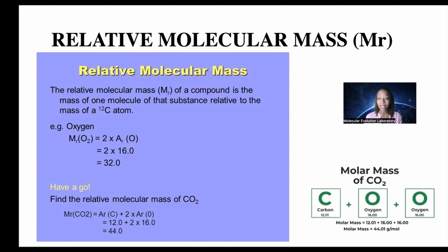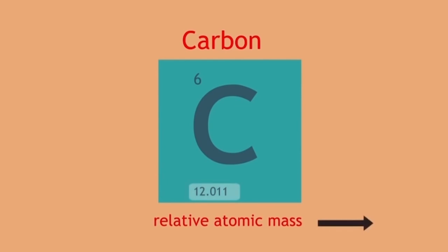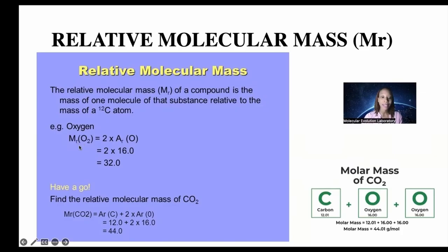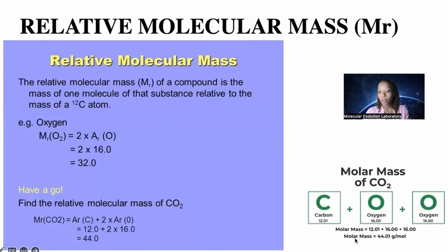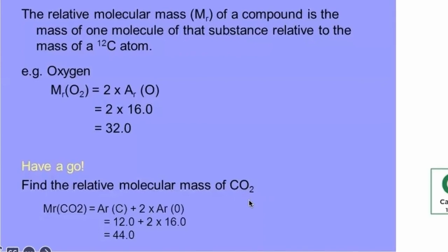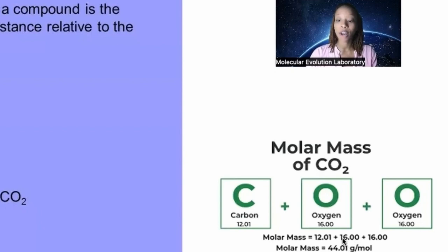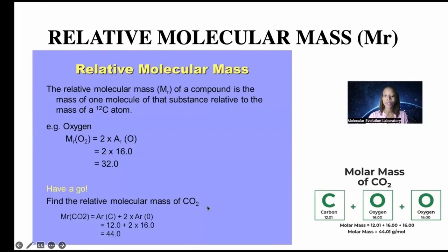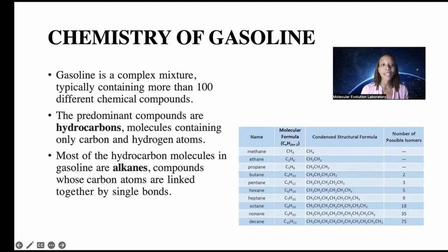All these mass calculations use the carbon atom as a standard. Oxygen has an average atomic mass of 16, and an oxygen molecule comprises two oxygen atoms, so the relative molecular mass of O2 is 16 × 2 = 32 grams per mole. For CO2, you find the molar mass of carbon (12) plus the molar mass of oxygen (16 × 2 = 32): 12 + 32 = 44.